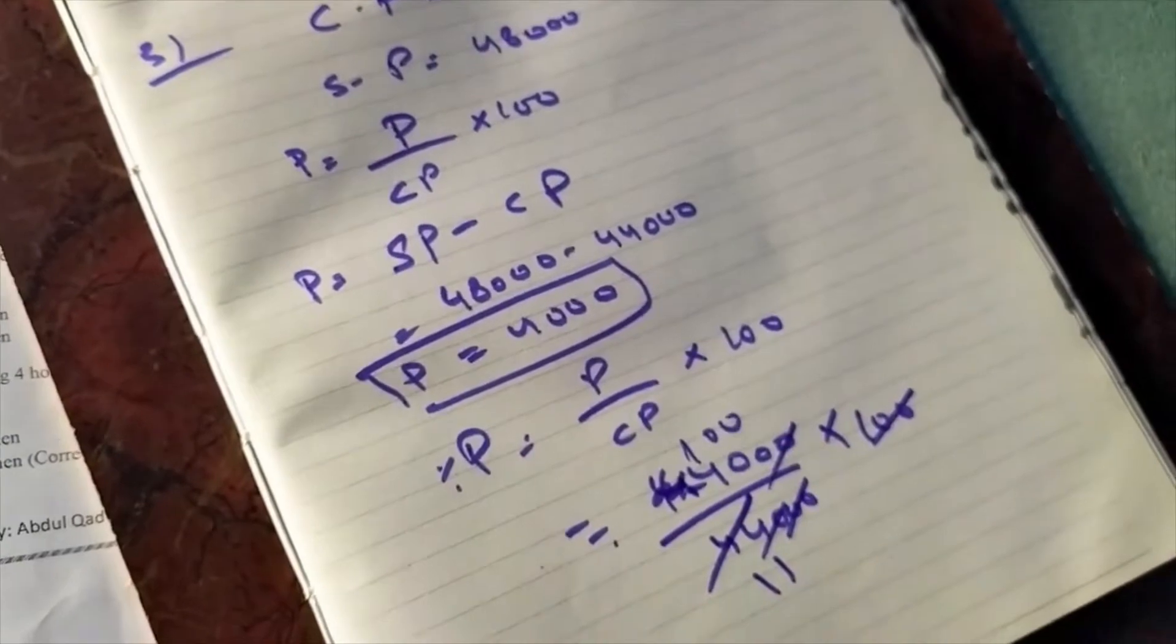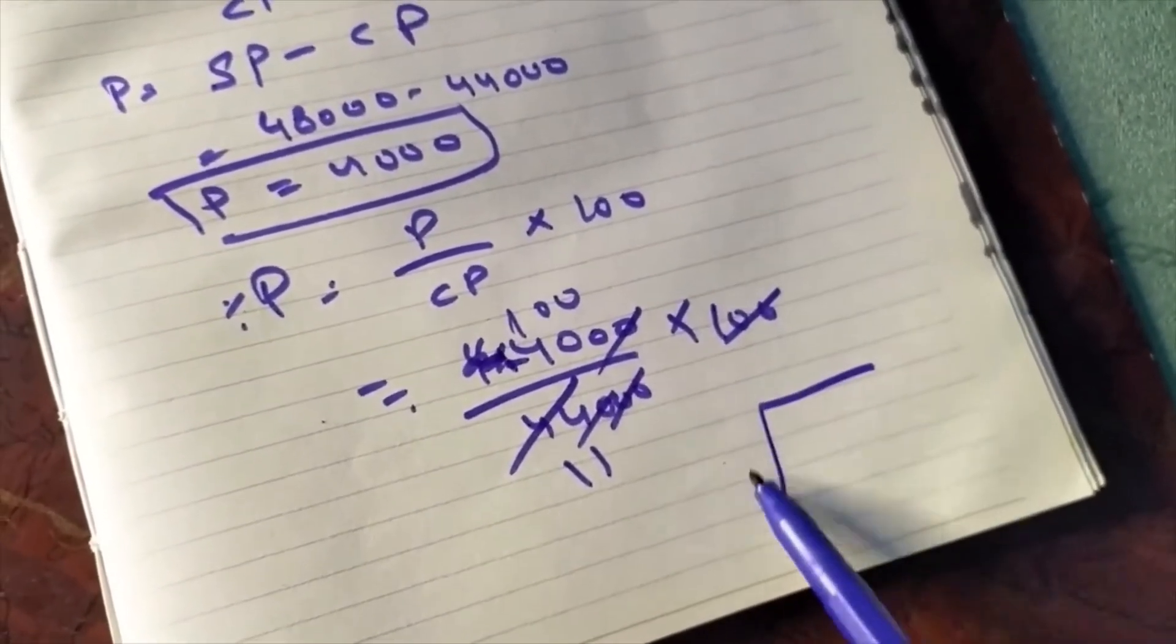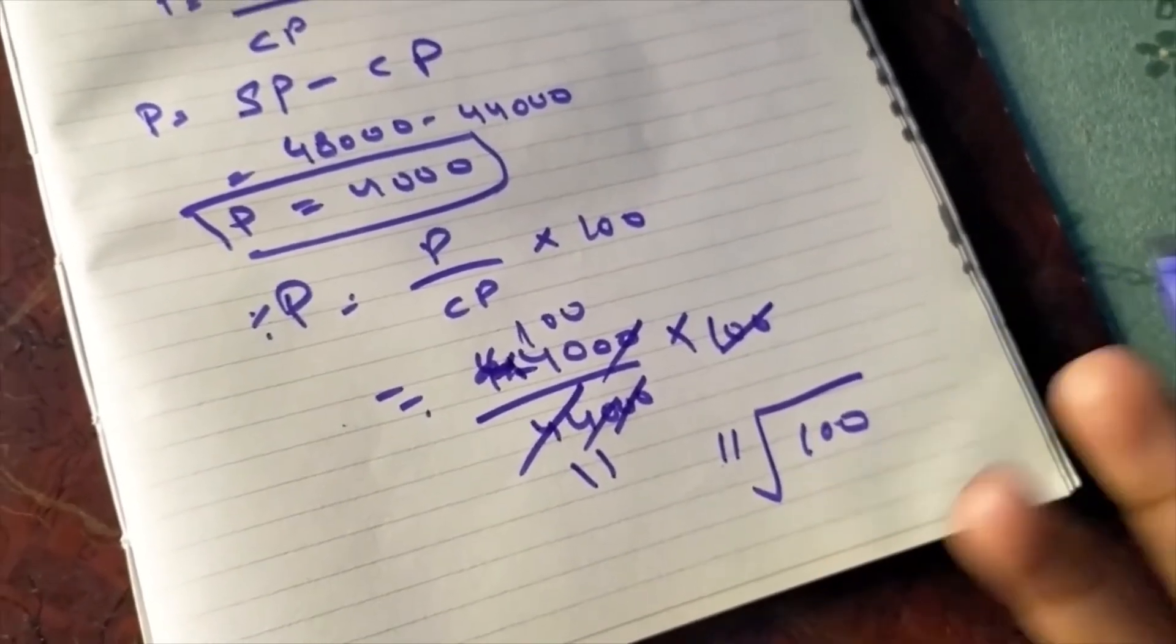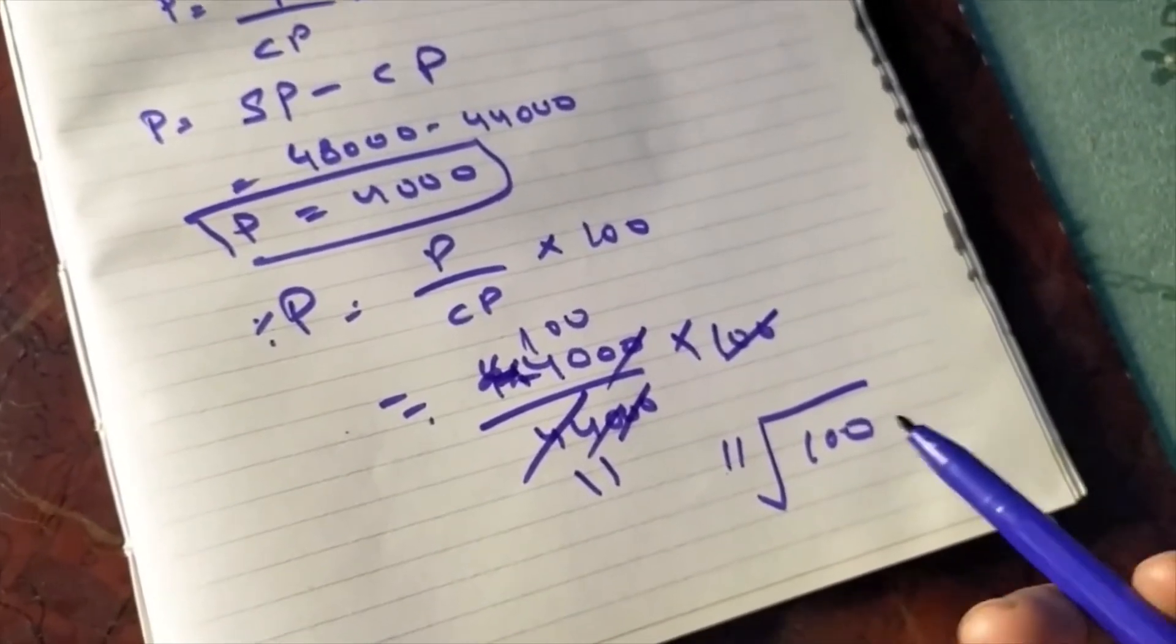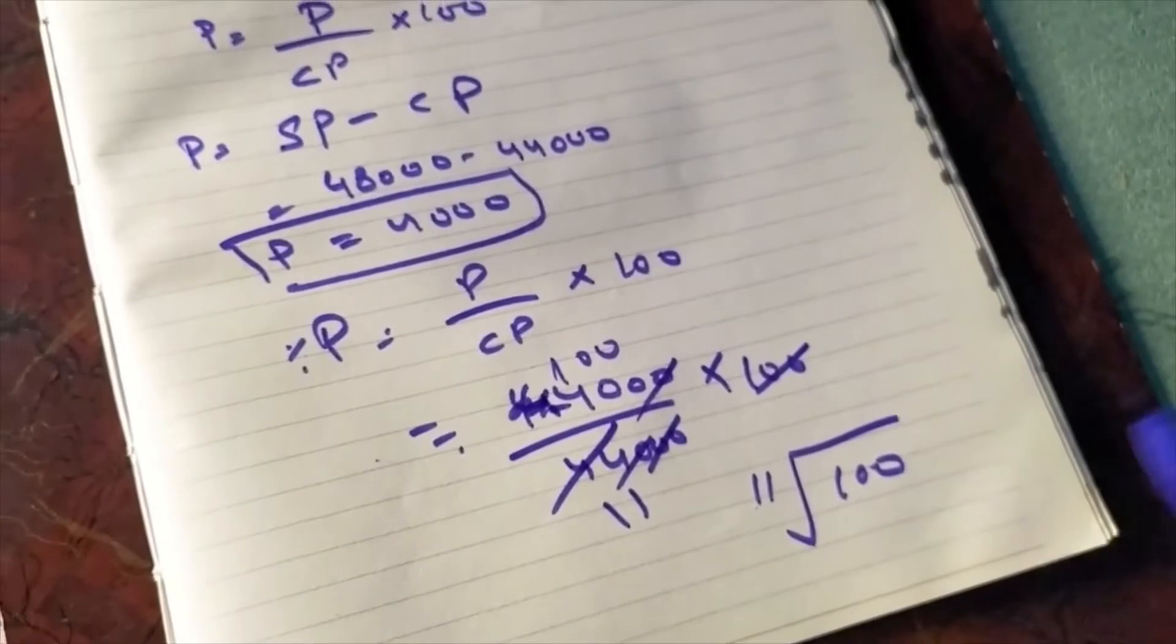Now you need to solve this by dividing 100 by 11. I'll show that too for those who are beginners and don't know this. So we'll use the 11 times table: 11 times 1 is 11, 11 times 2 is 22, 11 times 3 is 33.